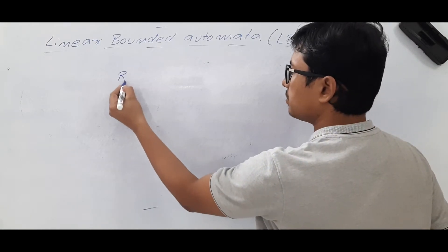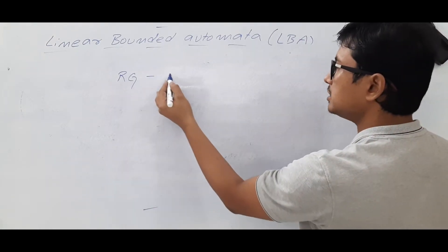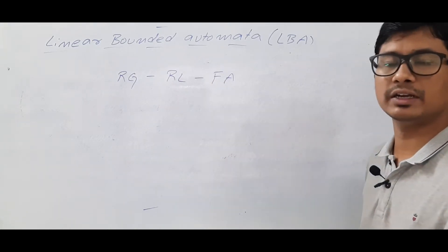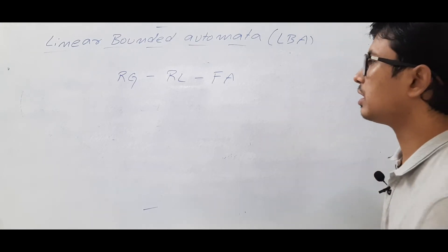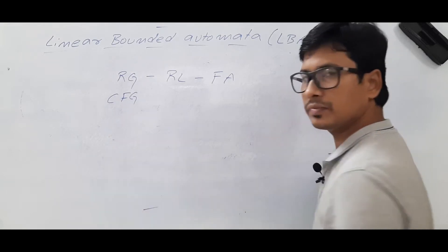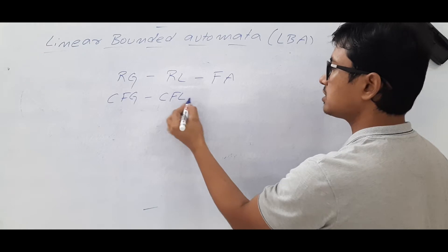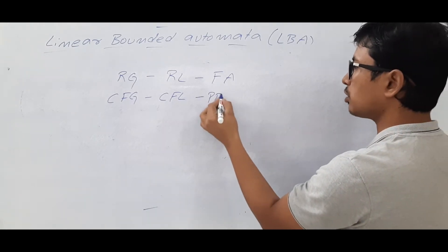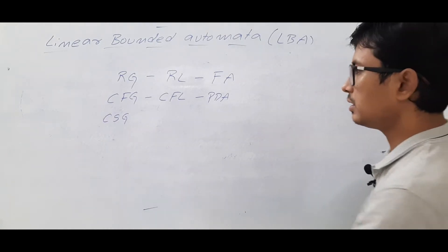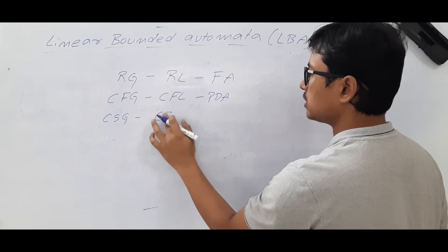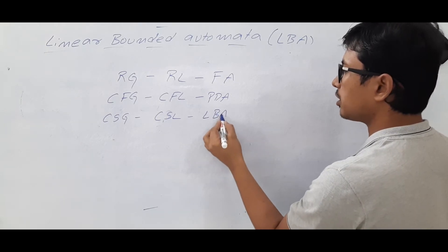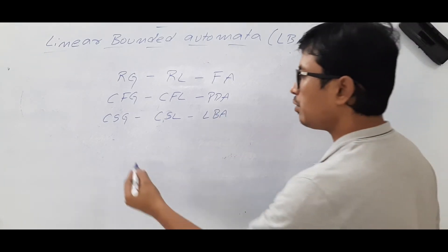We have already discussed that regular grammar generates the regular languages and can be modeled by using finite automata, whether it is a DFA, NFA, or epsilon-NFA. We have a context-free grammar that generates context-free languages and can be modeled by using a pushdown automata. Then we have context-sensitive grammar, which generates context-sensitive languages and can be modeled by using a linear bounded automata.